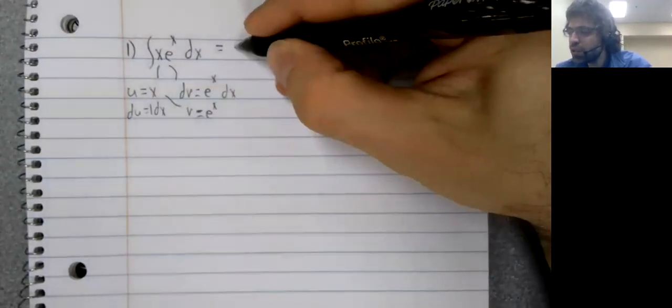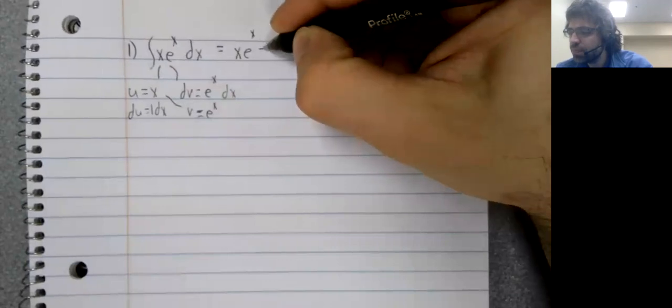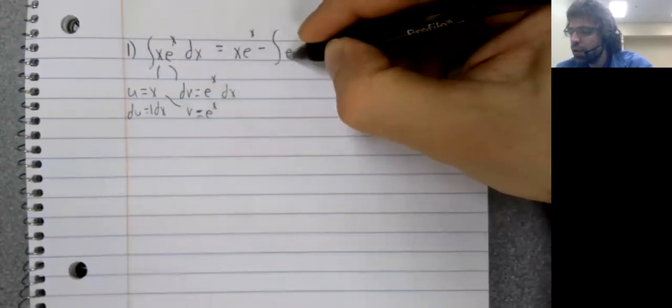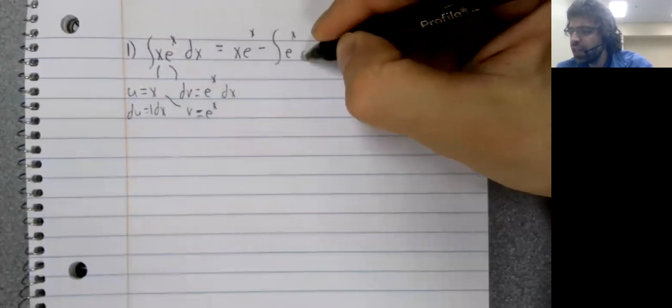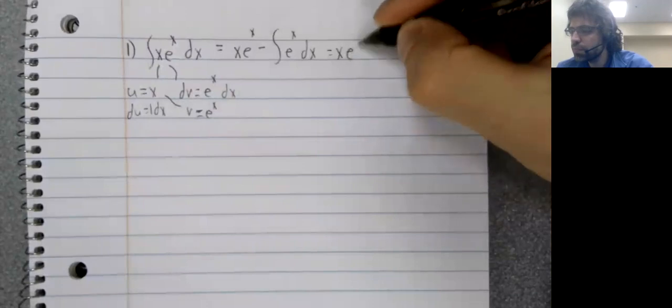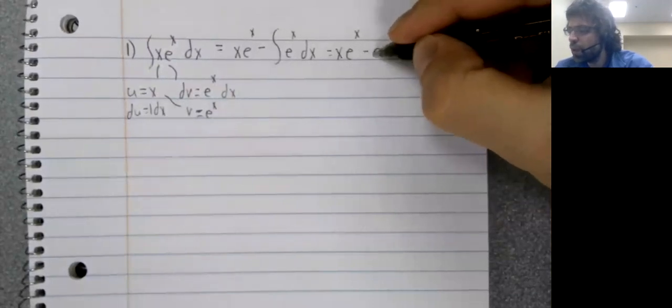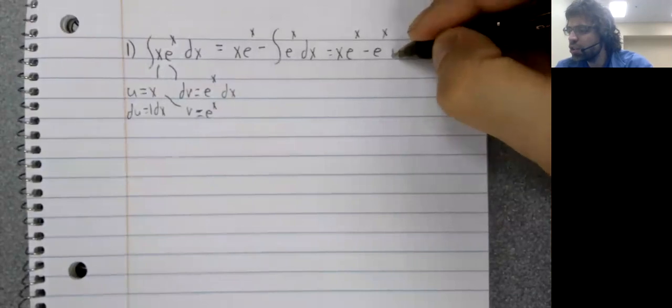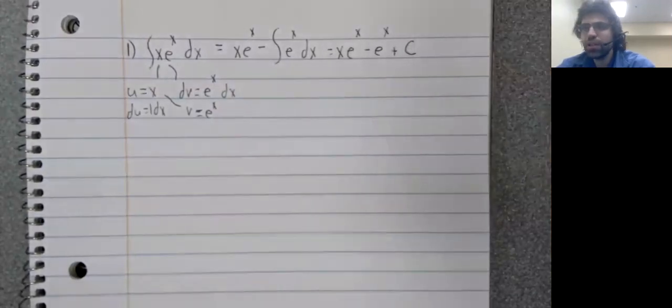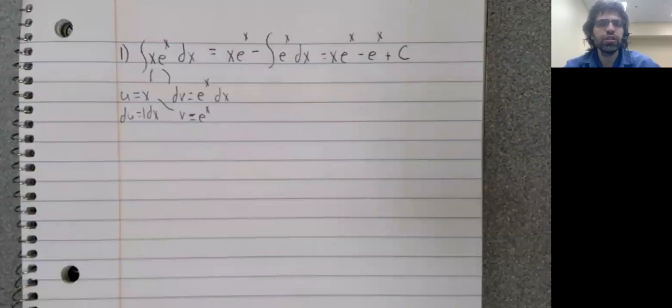But you would use U times V minus the integral of V DU. And the answer was not nothing. We wound up successfully taking this integral using integration by parts.